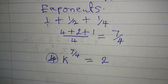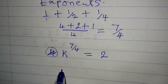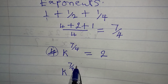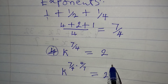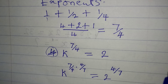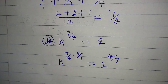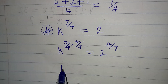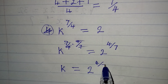Now, how do we transfer the power to the other side? We do that by multiplying the power by its reciprocal: 7/4 multiplied by 4/7. That reciprocal is also applied to the right-hand side, so the 7/4 cancels and k is now equal to 2 to the power of 4/7.